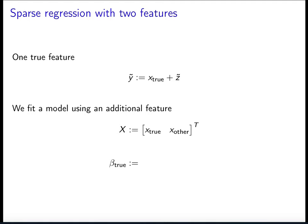However, we don't know that that's the true feature. There's another feature that we think might be relevant, which we call xOther, and we include it in the model. So think for a moment what the true vector of coefficients should be in this case. The true vector of coefficients is 1, 0.